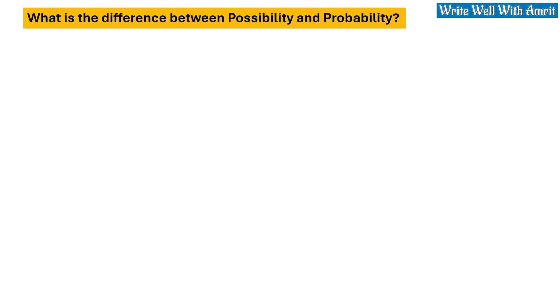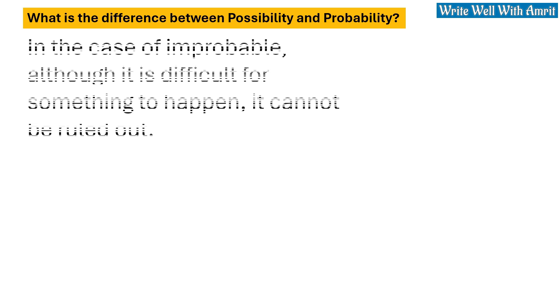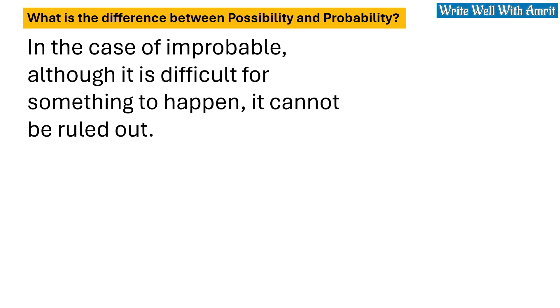It is improbable for a person to come alive after he has been dead for 5 minutes although not impossible. So in the case of impossible, something can be completely ruled out. In the case of improbable, although it is difficult for something to happen, it cannot be ruled out.